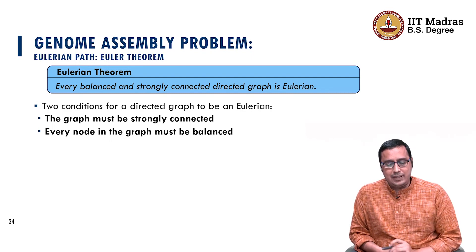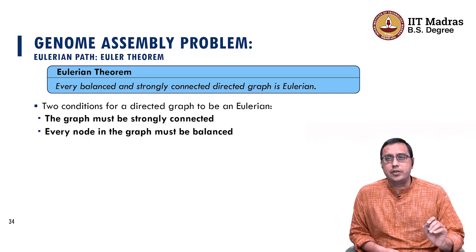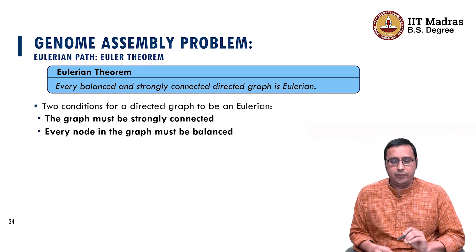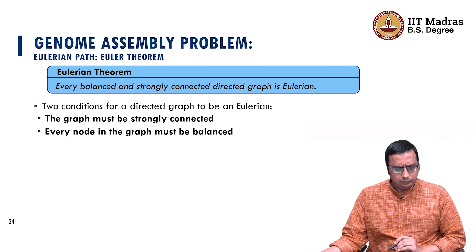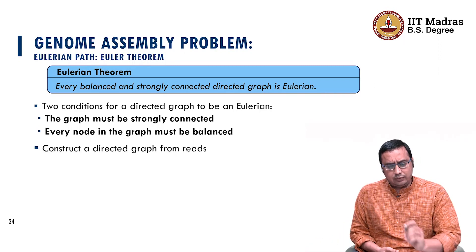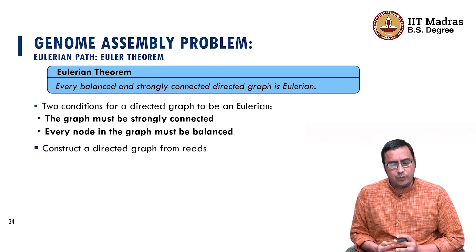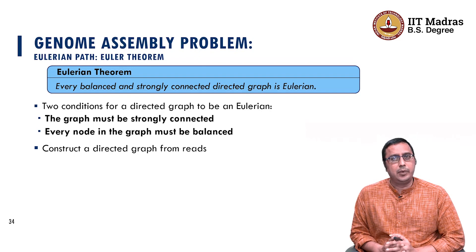The concept of balance is associated with the nodes. If a particular graph is proven to be Eulerian, then it is very straightforward to actually assemble the genome.